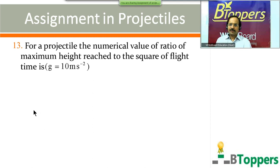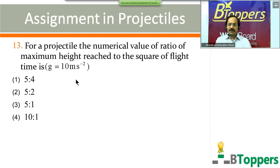Question number 13: for a projectile, the numerical value of the ratio of maximum height reached to the square of time of flight is — take g = 10 m/s². Come on, answer the question. This question was also given in one of the previous entrance examinations in the medical entrance MSET.